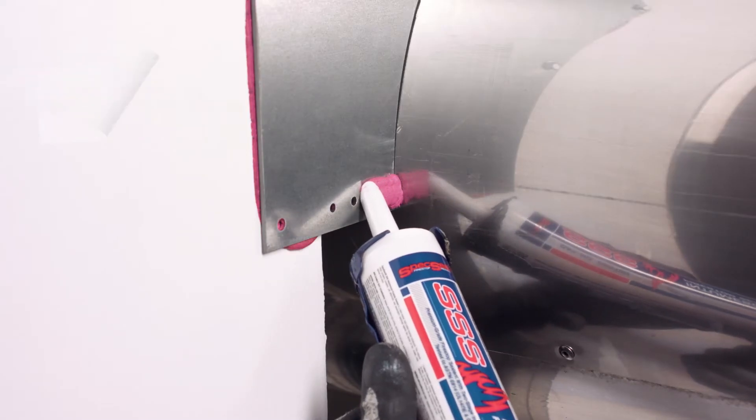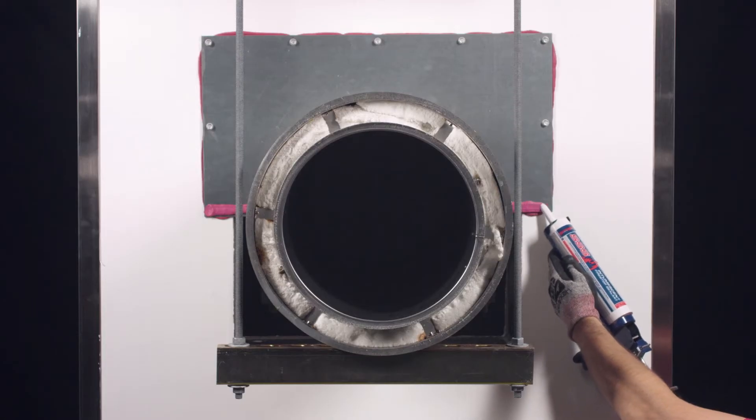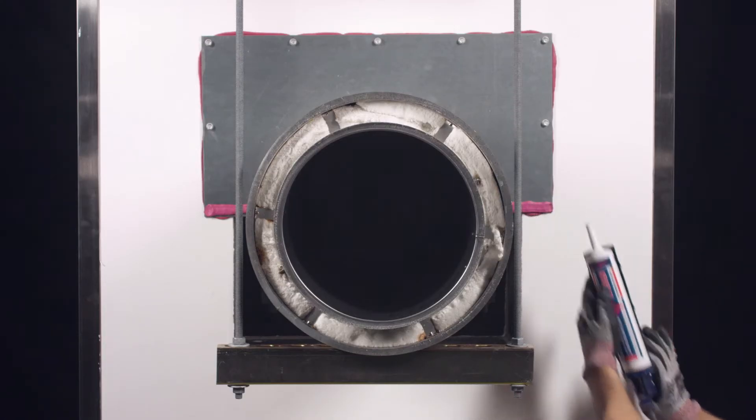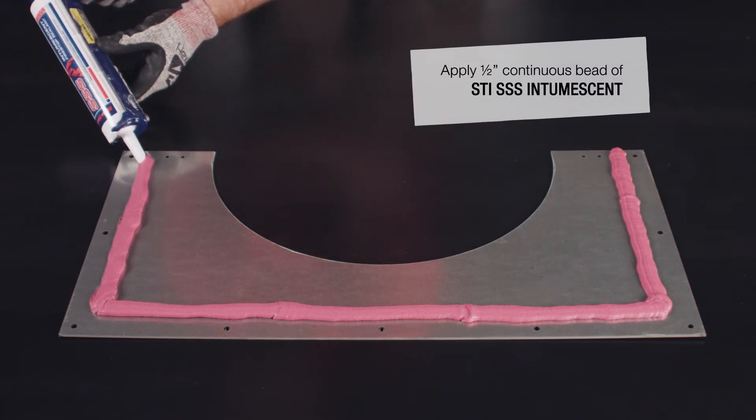Next, apply a generous bead of STI SSS intumescent around the bottom edge of the mounted fireplate. Then, apply a half inch continuous bead of intumescent around the edge of the second fireplate.